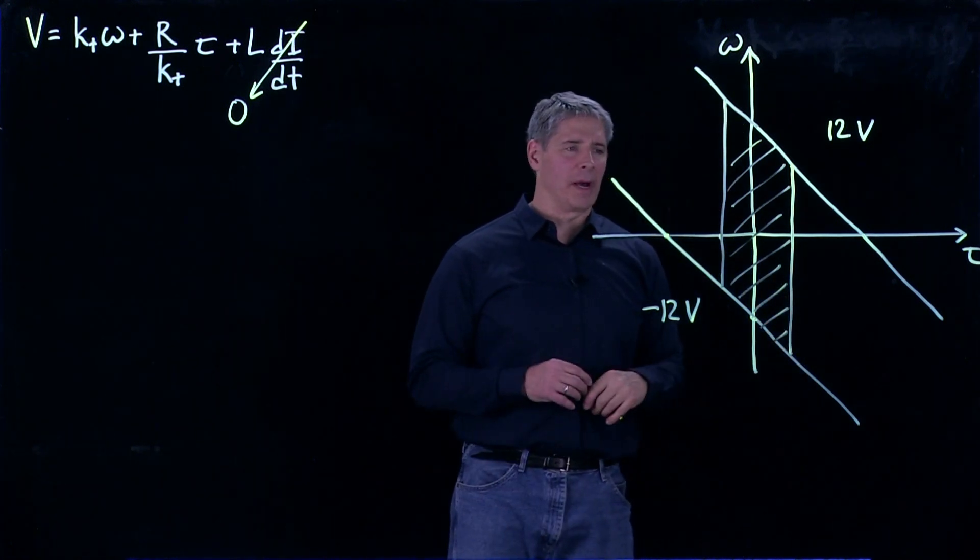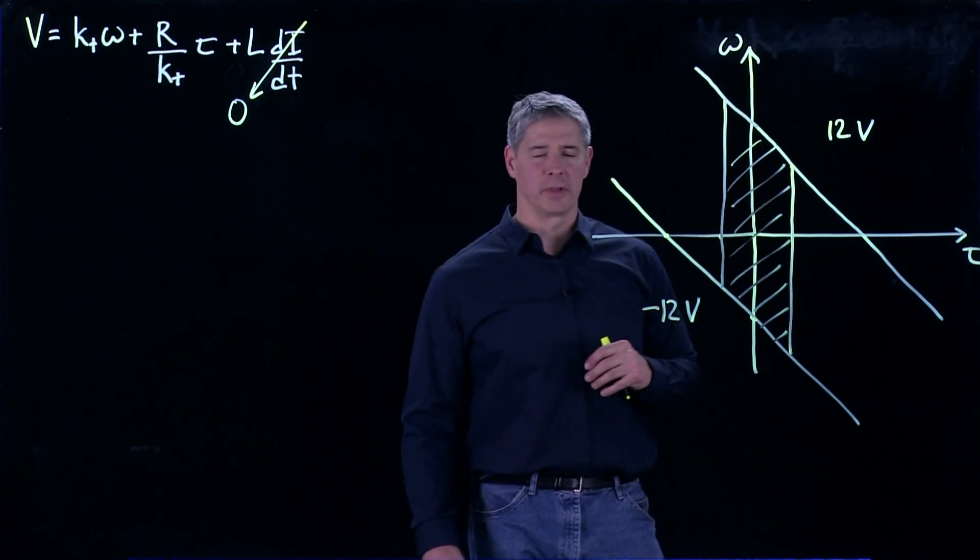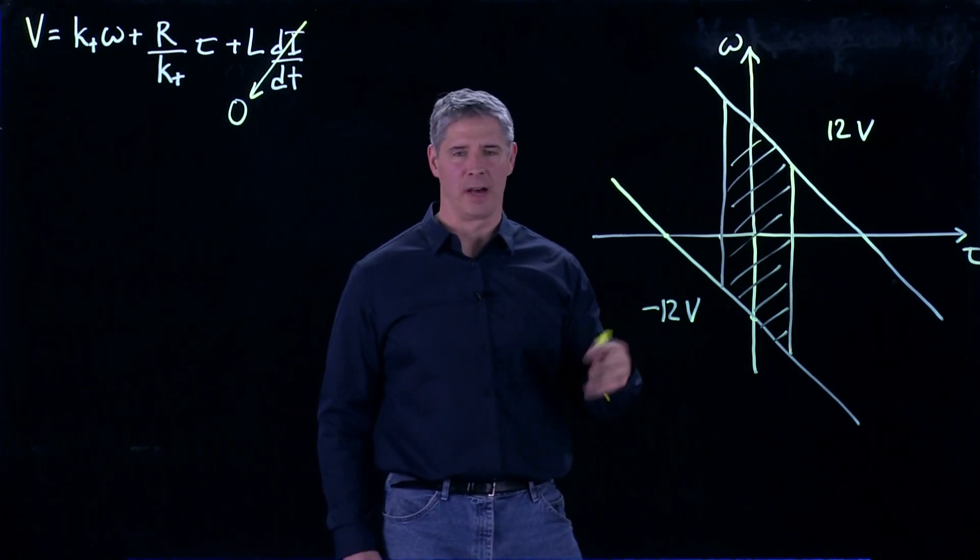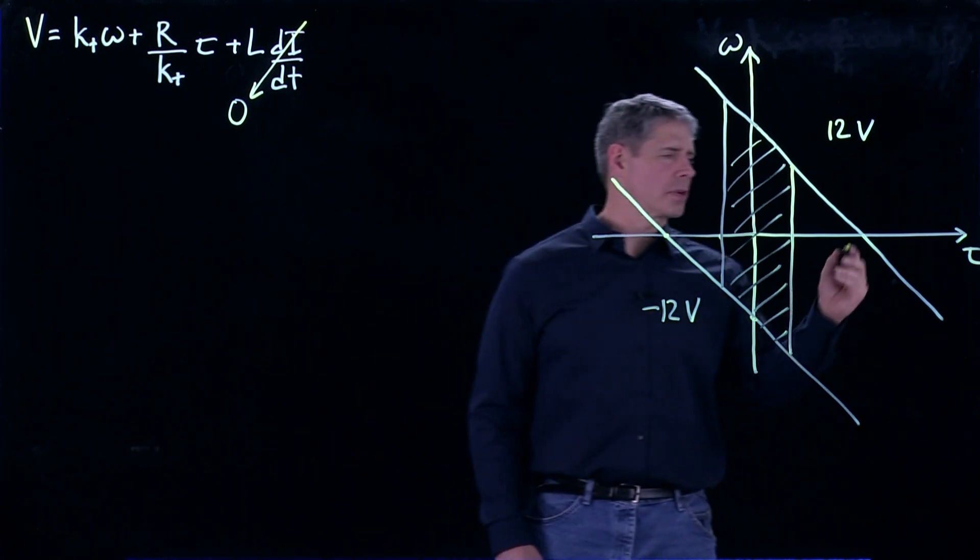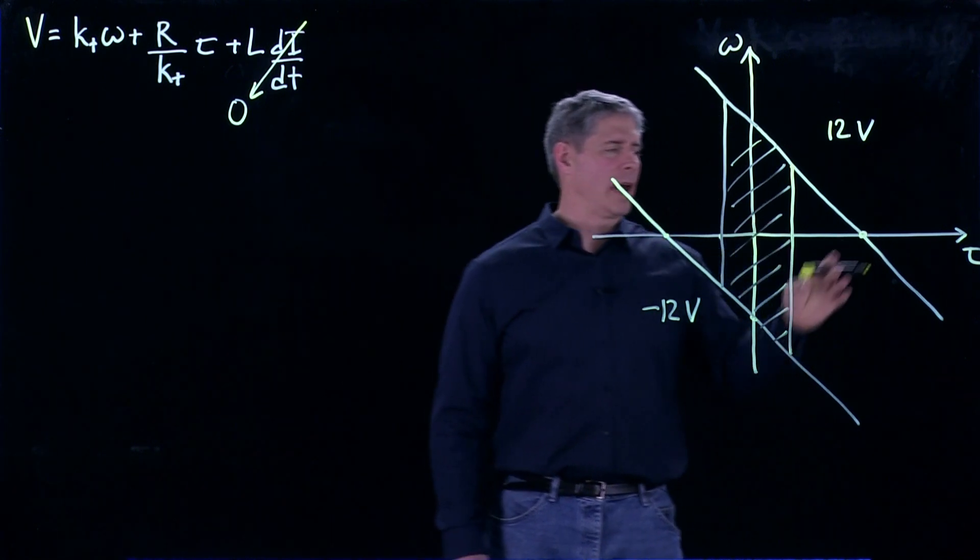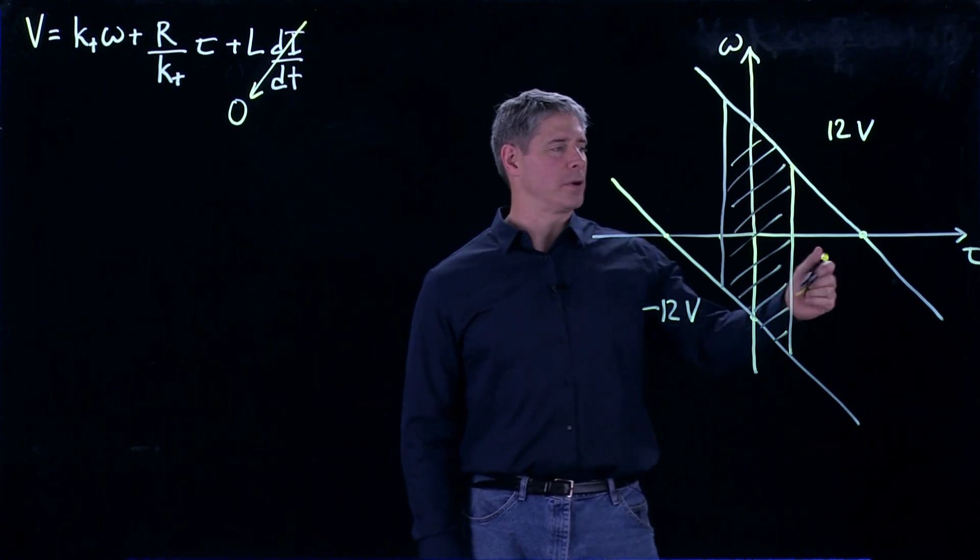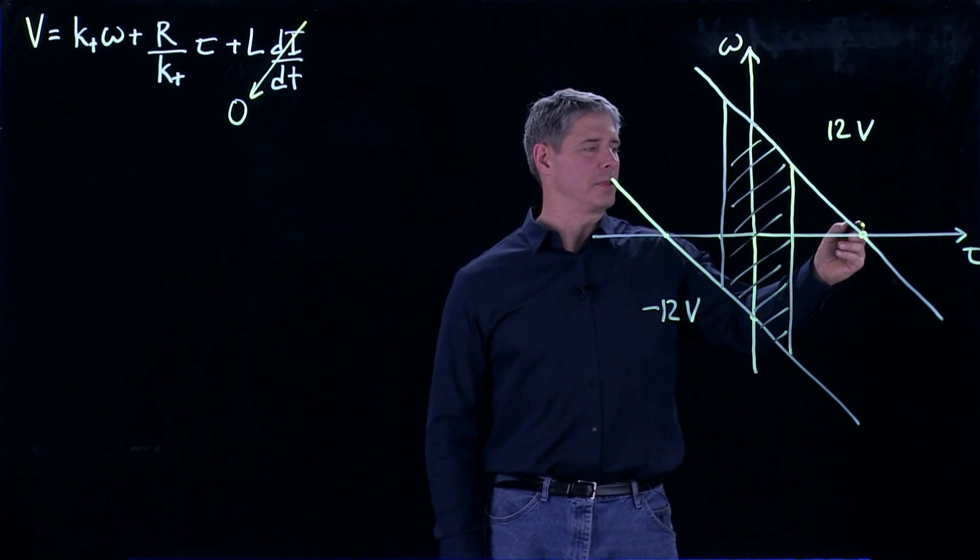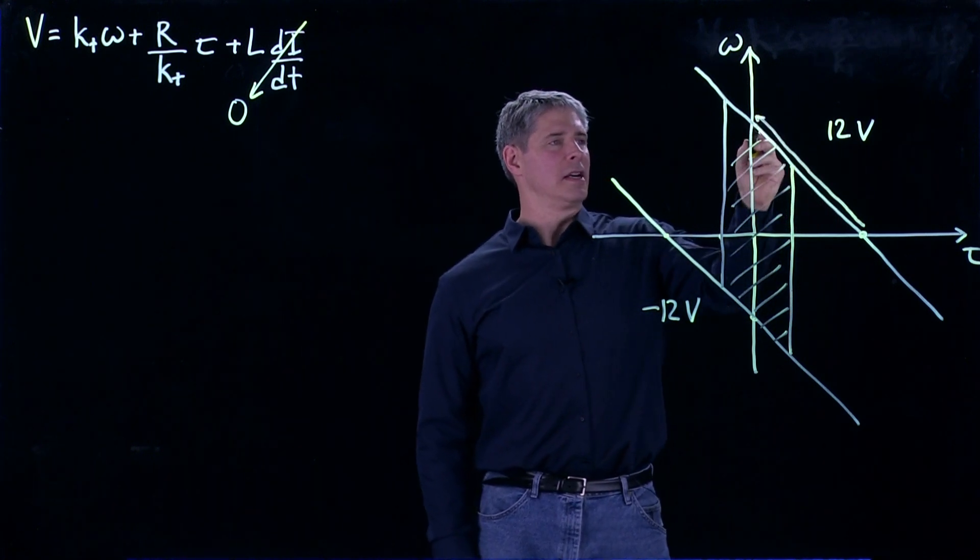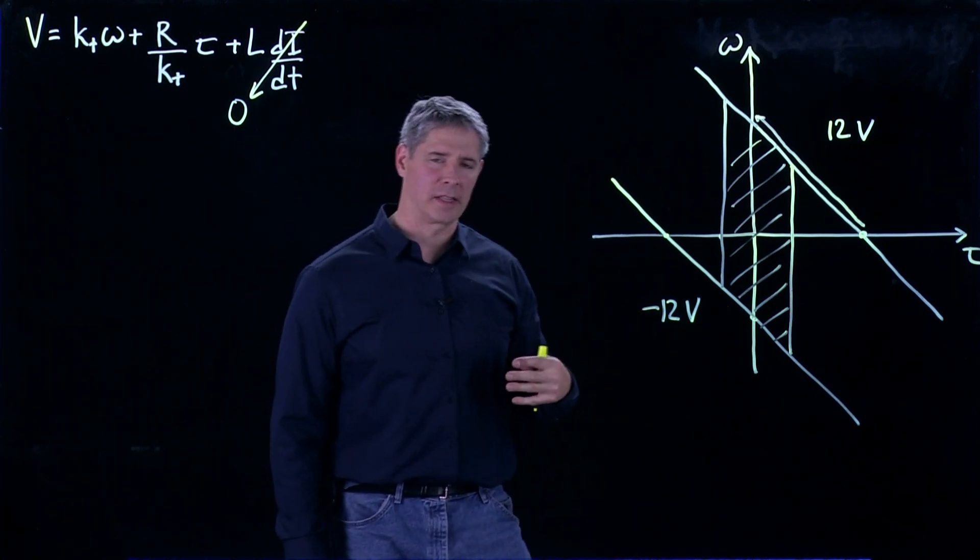And finally, you can think about, what if we started the motor at rest and we applied positive 12 volts to it? What's going to happen? And assume that there's no load on the motor, so it's not being prevented from spinning. So we're going to start out here at zero velocity. And the torque is going to be maximized when we start up. So we're applying 12 volts. What's going to happen is the motor is going to move along the speed-torque curve like this until it hits the no-load speed. And there it's just going to spin at the constant speed.